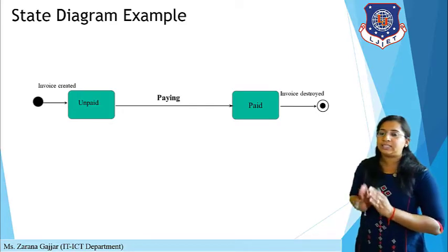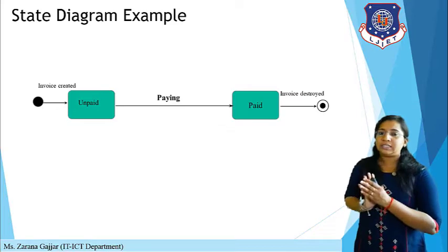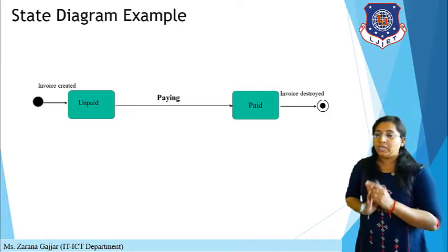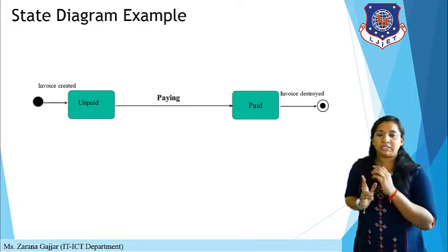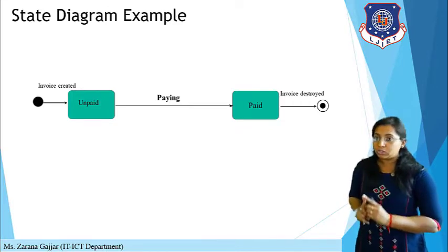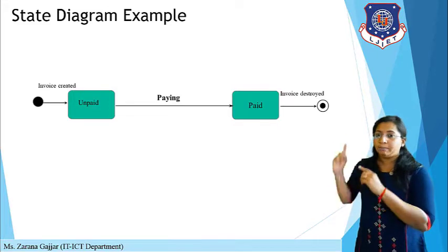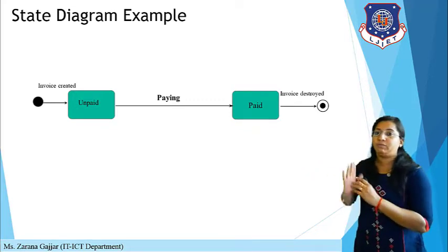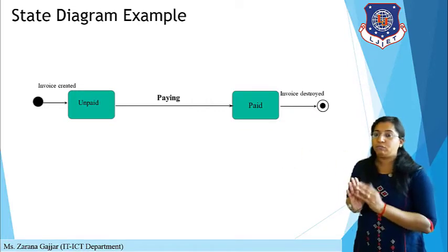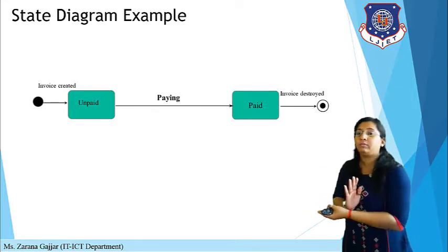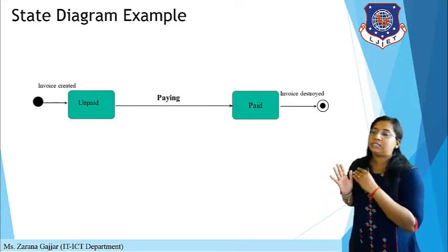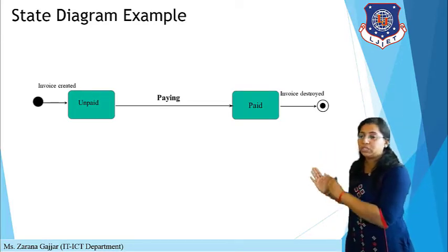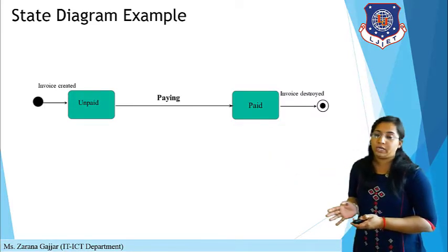Before understanding all the components, let's discuss a simple state diagram. This diagram defines a state diagram for any invoice. Here a solid black circle is the initial state. If an invoice is created, it will be in an unpaid state — the state is defined in a rectangle box with diagonal corners. Then if you are paying, there is a transition from unpaid to paid, and the state changes from unpaid to paid after completion of payment. Finally, when the invoice is destroyed, this is the final state. You initialize your state, then follow different states and transitions, and last is the final activity.